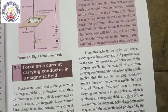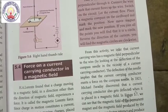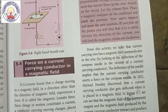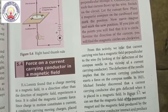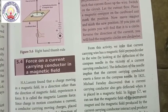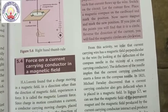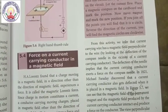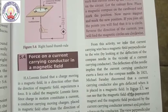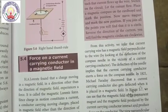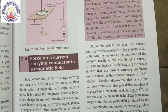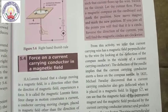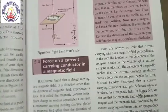In 1821, Michael Faraday discovered that a current-carrying conductor also gets deflected when it is placed in a magnetic field. In figure 5.7, we can see that the magnetic field of the permanent magnet and the magnetic field produced by the current-carrying conductor interact and produce a force on the conductor. The view perpendicular to the direction of the current is shown in figure 5.8.